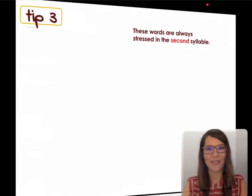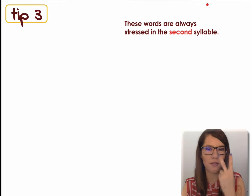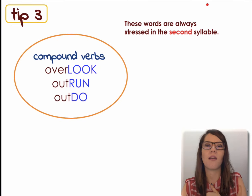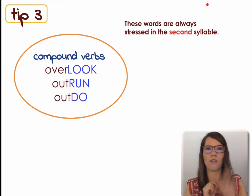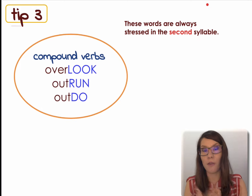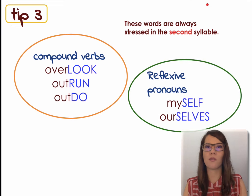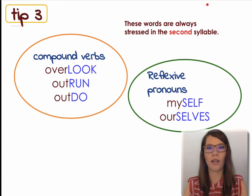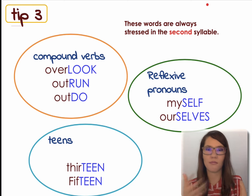Let's see tip number three now. This applies to groups of words that are stressed on the second syllable all the time. The first group is compound verbs like overlook, outrun, and outdo. Compound verbs consist of a preposition plus a verb, and since the verb is the most important information, we emphasize that. The second group is reflexive pronouns, which are always stressed on the self or selves syllable, like myself, ourselves, etc. Finally, numbers ending in -teen, like 13, 15, etc.